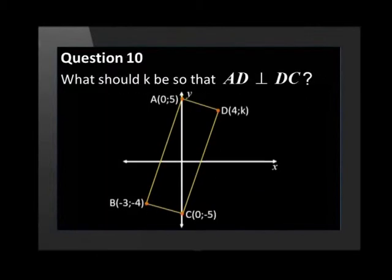Question 10. This sketch shows a quadrilateral ABCD with vertices A at coordinates (0, 5), B at coordinates (-3, -4), C at coordinates (0, -5), and D at coordinates (4, K), where K is greater than or equal to 0. What should K be so that AD is perpendicular to DC?